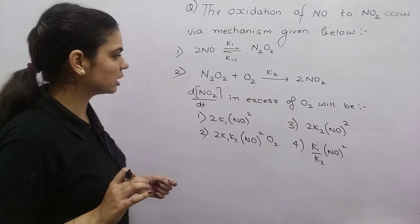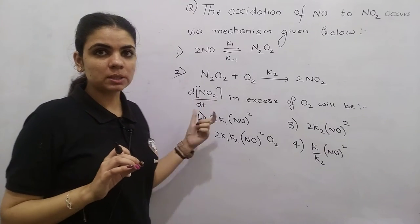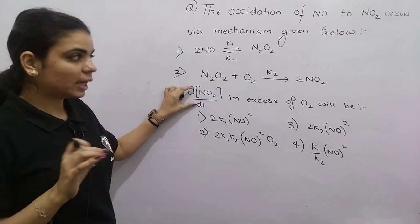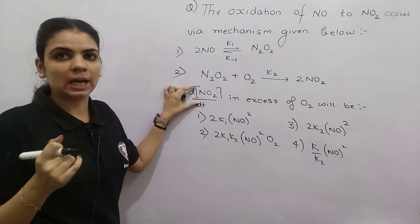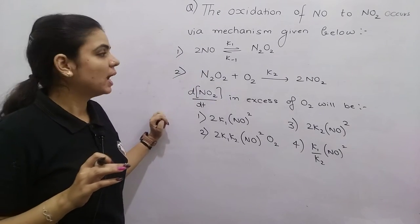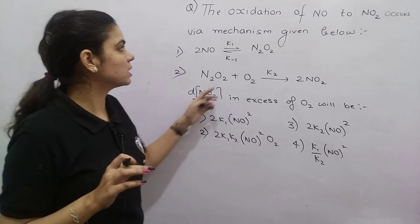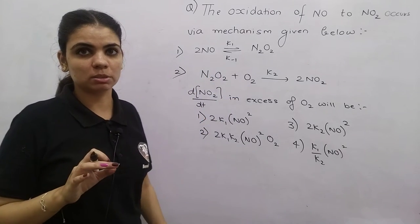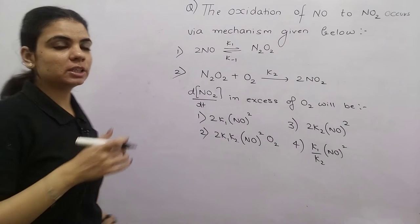As soon as you see such a question, first look where NO2 is present. NO2 appears only in the last step, so you will write the rate of that reaction.